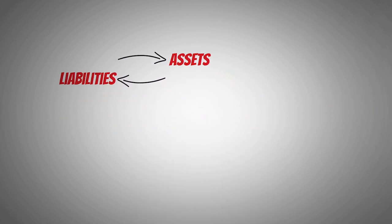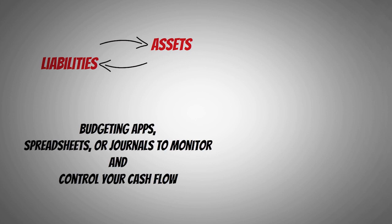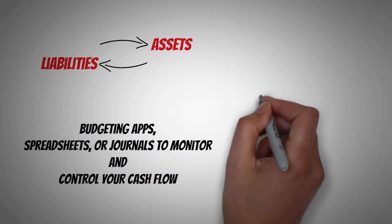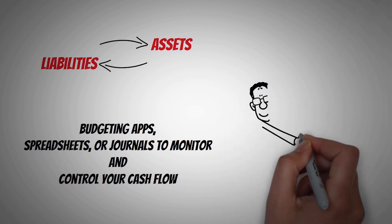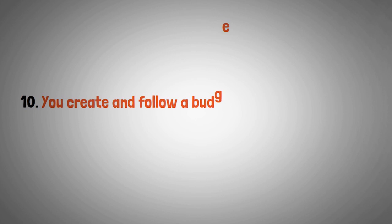You use tools such as budgeting apps, spreadsheets, or journals to monitor and control your cash flow. You also review your financial statements regularly and look for ways to improve them. You don't just leave things to chance, you take charge of your finances. Number 10: you create and follow a budget that aligns with your values and priorities.